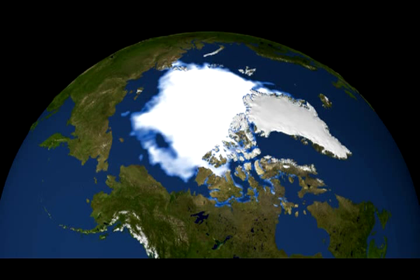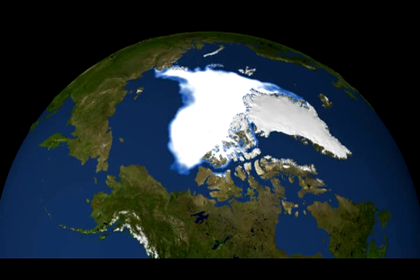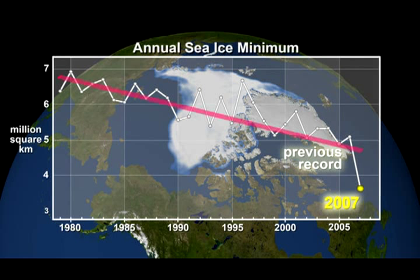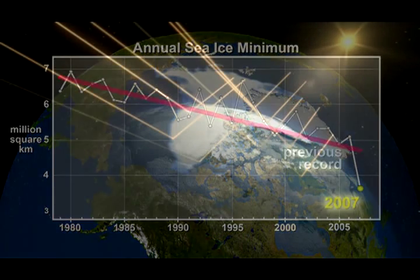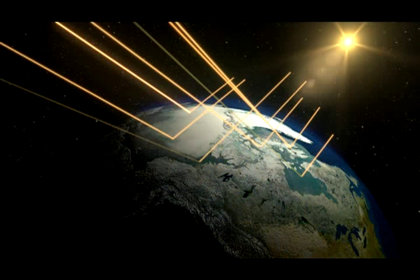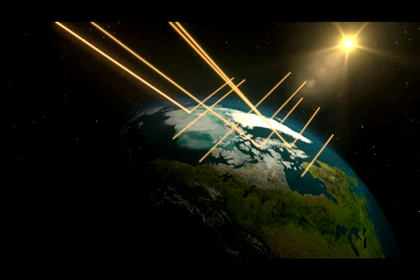We can see that over the last 30 years there's been a decreasing trend in the amount of sea ice that survives the summer melt. The Arctic sea ice cover acts sort of like a mirror sitting over the pole and it reflects sunlight back into outer space. Without the sea ice there to reflect the sunlight, this energy gets absorbed by the ocean and further warms up the Arctic.